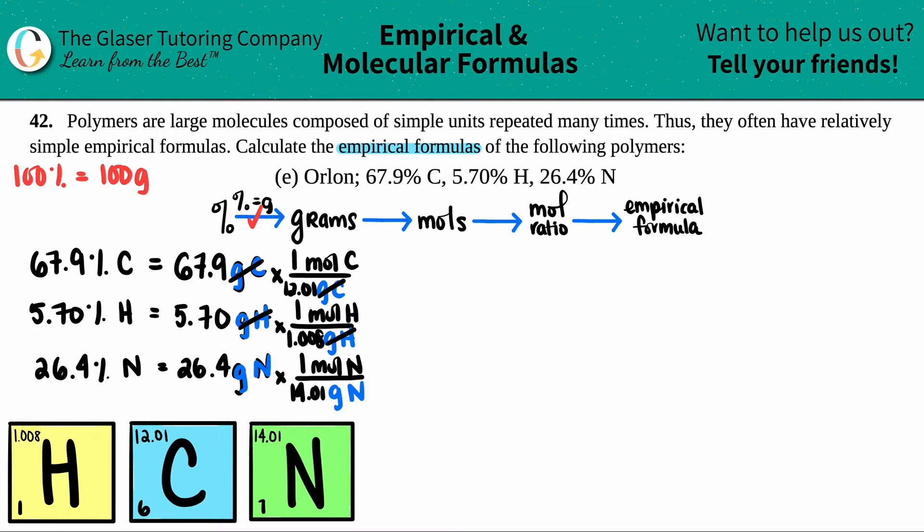Now the grams cancel. Not the numbers, but just the units. And we're left with the unit that we want. Mole of carbon, mole of hydrogen, and then mole of nitrogen. Let's do the actual math. So 67.9 divided by 12.01, I'm going to cut it off after a few decimals. So 5.654, and that's mole of carbon. 5.7 divided by 1.008, I get 5.655. Very, very close. That's a good thing. 26.4 divided by 14.01, I get 1.88, and that's mole of nitrogen. Halfway there, guys.